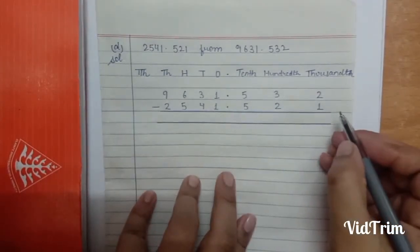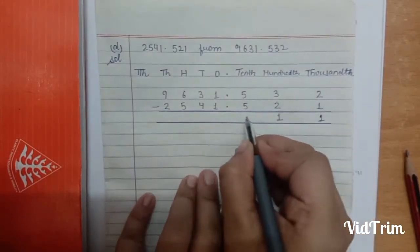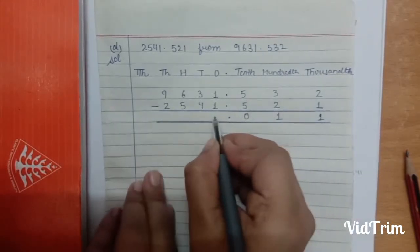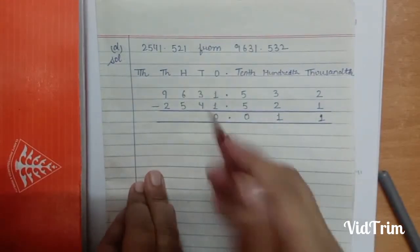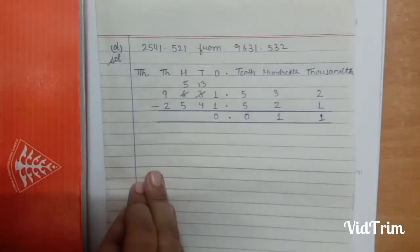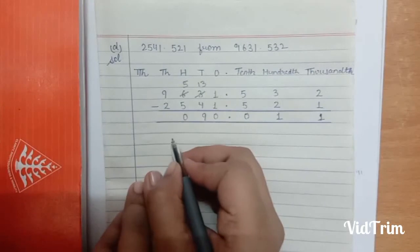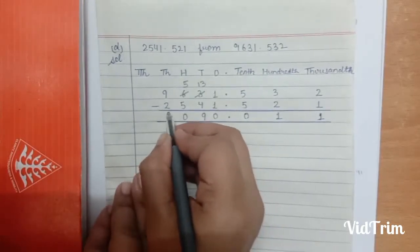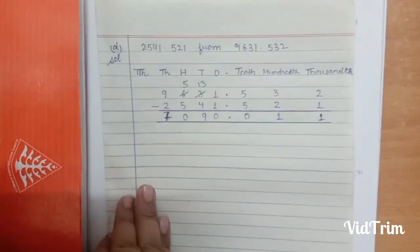We always start from the right side. So 2 minus 1 is 1, 3 minus 2 is 1, 5 minus 5 is 0, decimal under decimal, 1 minus 1 is 0. Now 4 cannot be subtracted from 3, so we take a borrow from 6: 3 becomes 13 and 6 becomes 5. So 13 minus 4 is 9, 5 minus 5 is 0, and 9 minus 2 is 7. So the answer is 7090.011.